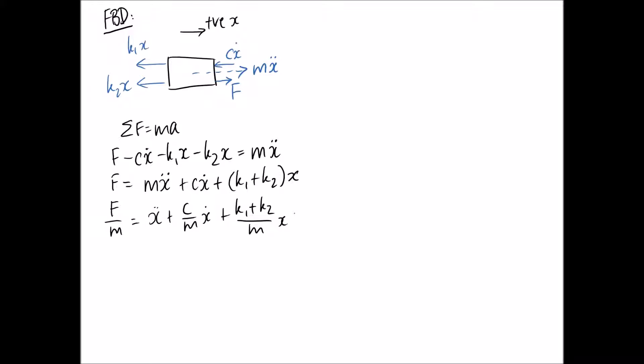So now I should be able to find omega n and zeta, remembering my equation. Alright, so I have a one in front here which equates to the one in front up here. So that means that my x dot term on this side has to equal the x dot term on this side, and the x term here has to equal the x term here.